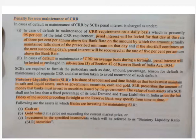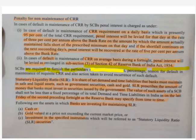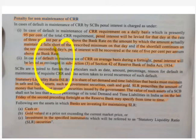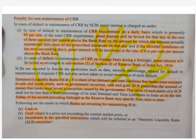To summarize CRR penalties: if it is for one day, the penalty is bank rate plus 3%. If for more than one day, the penalty is bank rate plus 5%. This is very, very important for your examination. CRR on an average basis during a fortnight, penal interest will be levied as per subsection 3 of section 42 of the RBI Act. Just remember: one day is bank rate plus 3%, second day onwards is bank rate plus 5%.